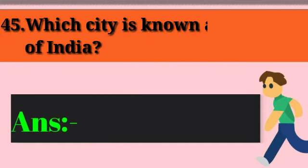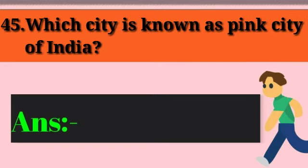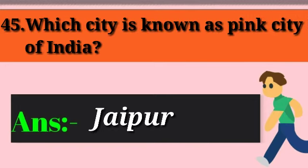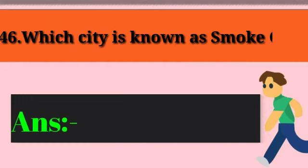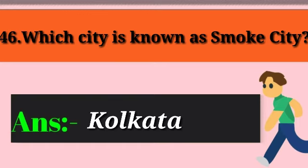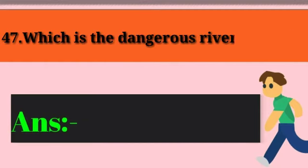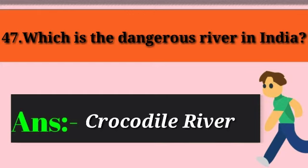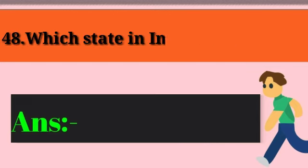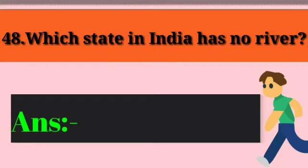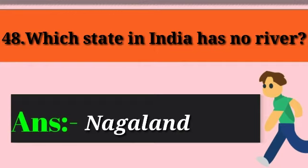Question 45: Which city is known as the Pink City of India? Answer: Jaipur. Question 46: Which city is known as the city of joy? Answer: Kolkata. Question 47: Which is the most dangerous river in India? Answer: Kosi River. Question 48: Which state in India has no river? Answer: Nagaland.